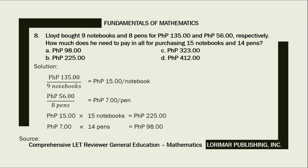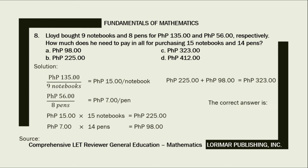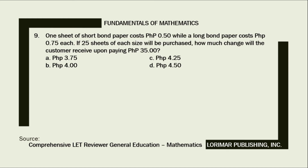We have to add 225 pesos and 98 pesos to get our final answer. 225 pesos plus 98 pesos equals 323 pesos. Therefore, the correct answer is letter C, 323 pesos. Problem number 9.